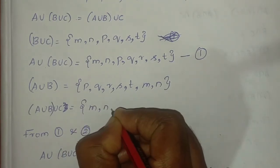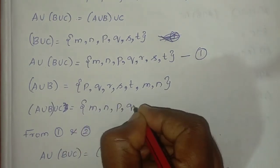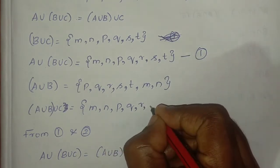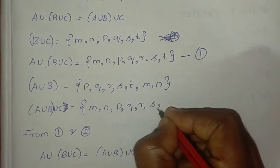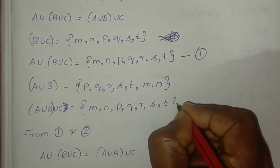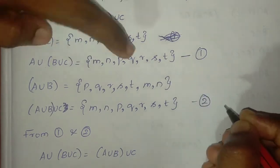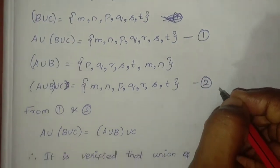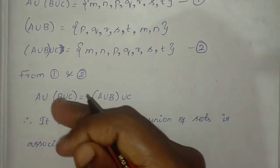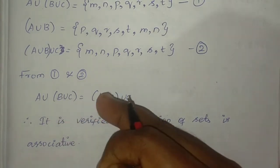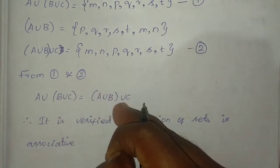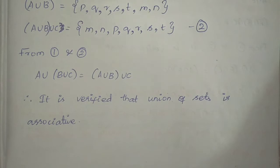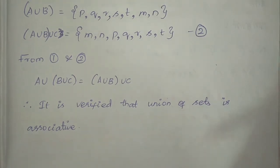The full result is the set {M, N, P, Q, R, S}. This is equation 2. Comparing equation 1 and equation 2, they are the same. So A union (B union C) equals (A union B) union C. It is verified that union of sets is associative.